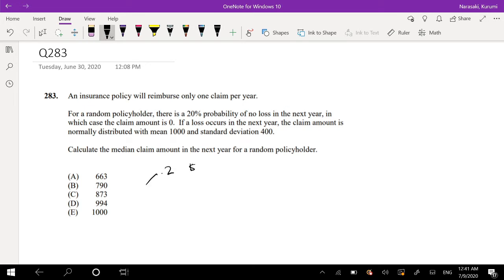So the claim amount is $0. However, if a loss occurs in the next year, the claim amount is normally distributed. So there is 0.8 probability that it is normally distributed, with a mean of $1,000 and a standard deviation of $400.